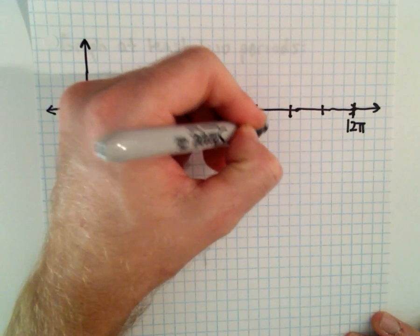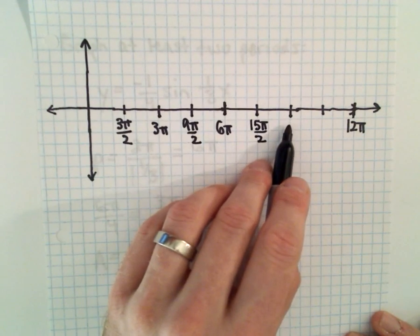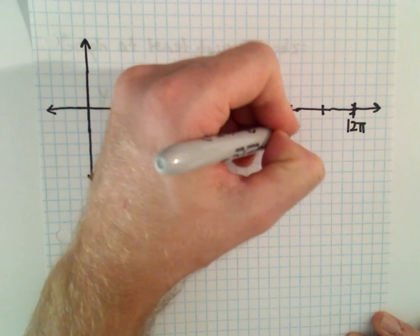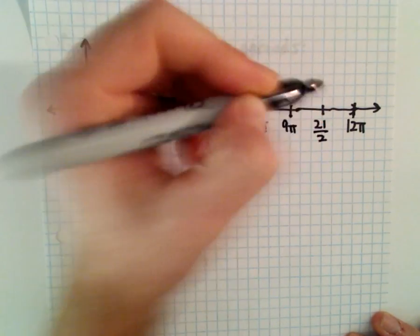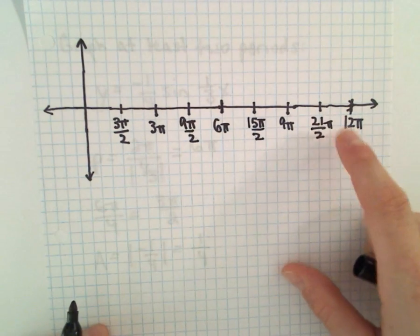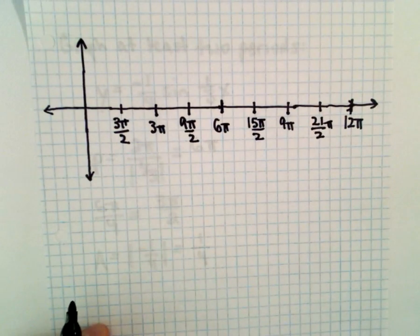Then we would have 15 over 2, then we would have 18 over 2, which would be 9 pi. And then we would have 21 over 2 times pi, and lastly, we would have 24 over 2, which would be 12 pi.